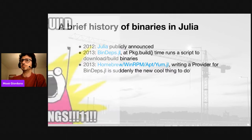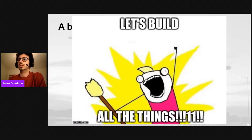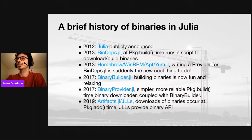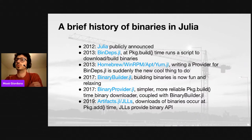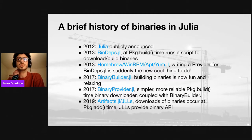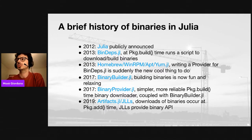So what was the solution? Well, let's build all the libraries from scratch ourselves. This is how BinaryBuilder was created in 2017. Initially it was coupled with BinaryProvider, which was the package actually used by Julia packages to require the libraries that have been built with BinaryBuilder. But this was still relying on the pkg.build step during the installation, so this was still not ideal.